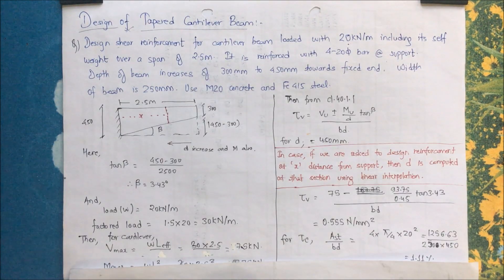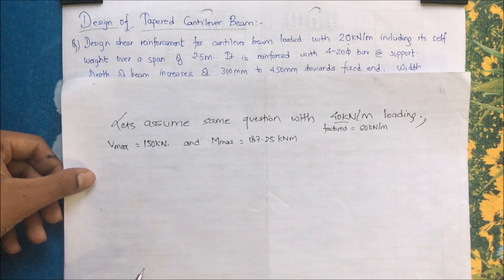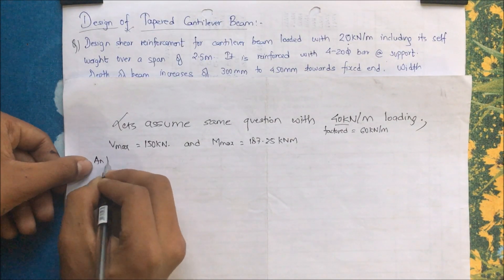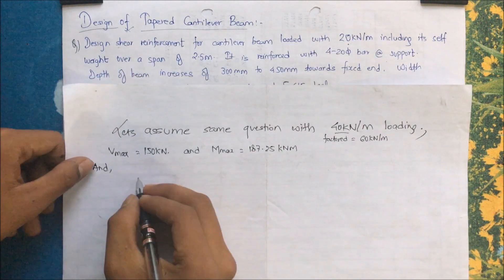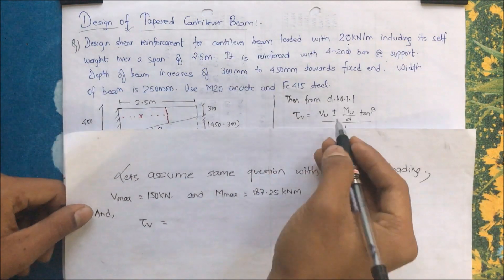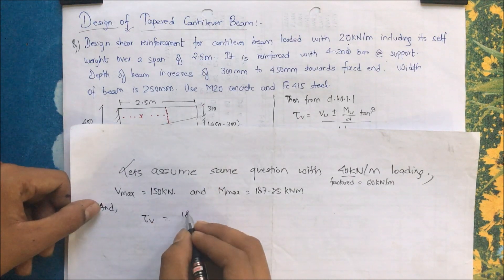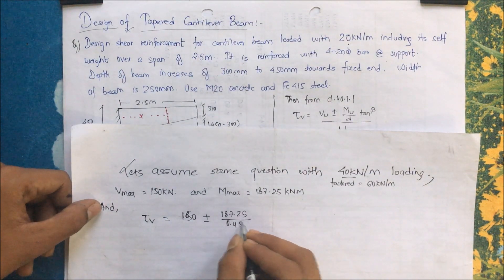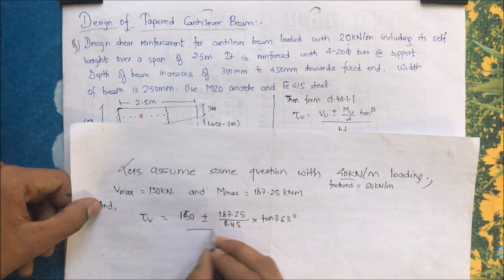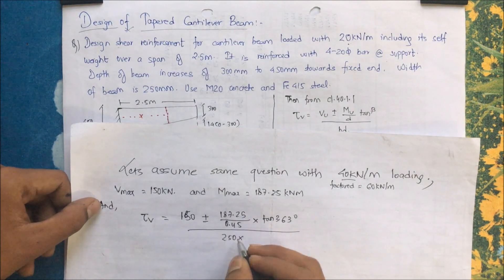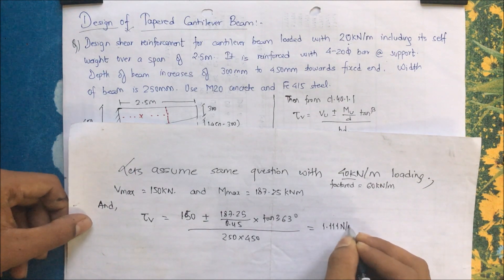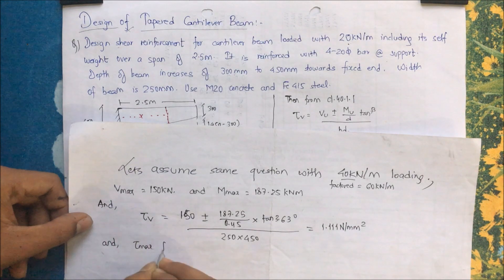For a second example with a load of 40 kN/m (factored), V_max = 150 kN and M_max = 187.25 kN·m. Using the same formula, tau_v = (150 ± 187.25 / 0.45 × tan(3.43°)) / (0.25 × 0.45), which gives tau_v = 1.11 N/mm².